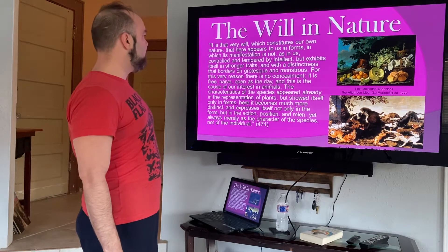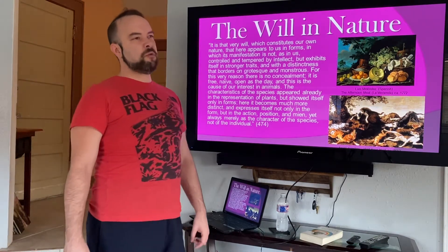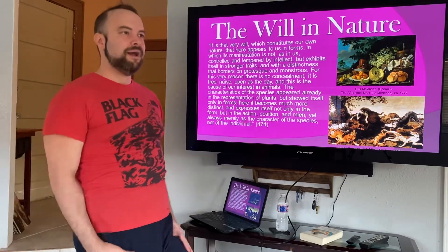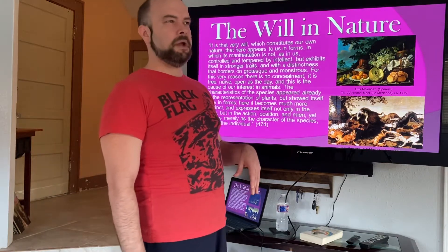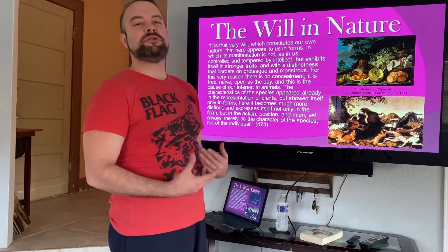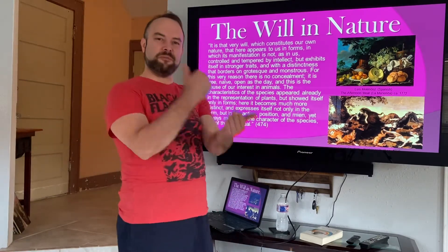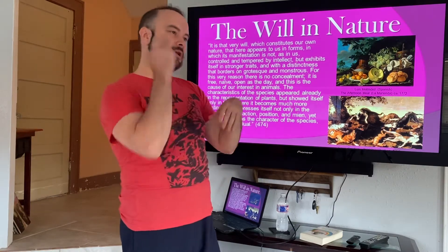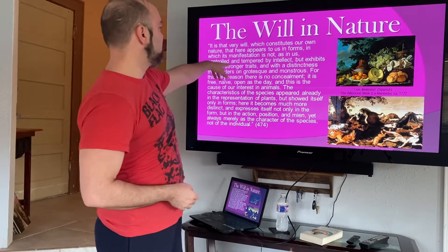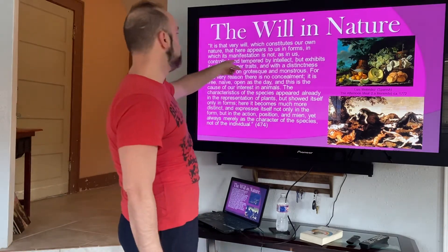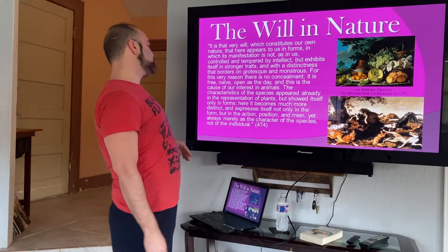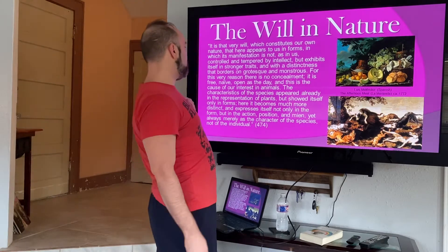It is that very will which constitutes our own nature that appears to us in forms — this is almost like Aristotle in a way. The fruit has a will, just like we do; it has a vegetable will. For Aristotle there was a vegetative soul, an animal soul, and then the rational, with humans having all three. When we look at the fruit and vegetables, we see a manifestation of a will which is not controlled and tempered by the intellect, but exhibits itself in stronger traits with a distinctness that borders on the grotesque and monstrous. There's no concealment; it is free, naive, open as the day.